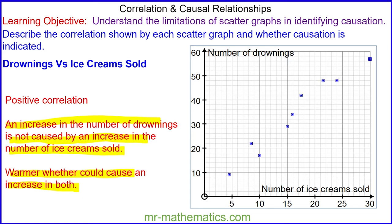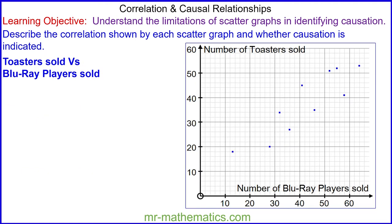Let's try another example. Here we have a scatter graph showing the number of toasters sold and the number of Blu-ray players sold. Do you want to take a second to identify the correlation and then think about whether one causes the other? You can pause the video and resume it when you're ready.